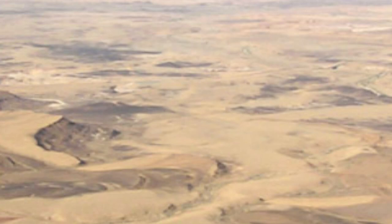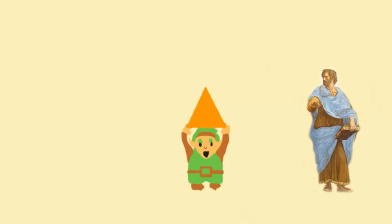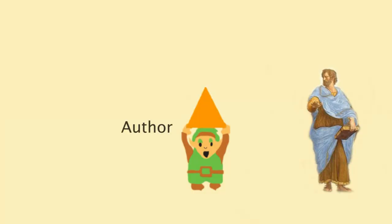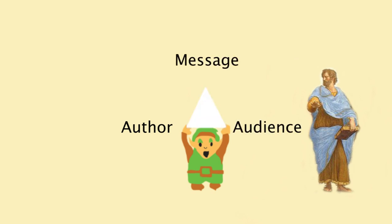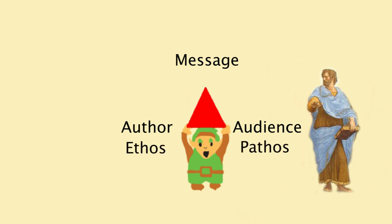Around the same time as Plato, somewhere in the ancient world, a man named Aristotle referred to three core concepts of rhetoric that we now call the rhetorical triangle. The triangle consists of the author, the message, and the audience. These parts of the triangle correspond with three appeals you can use in an argument: ethos, pathos, and logos.